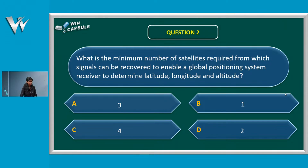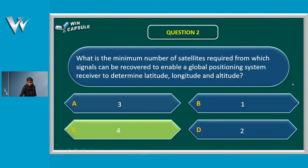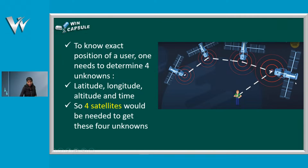Option C. Second question: What is the minimum number of satellites required from which signals can be recovered to enable a GPS receiver to determine latitude, longitude and altitude? The unknowns are latitude, longitude, altitude, and time — four unknowns. So the minimum satellites are four.